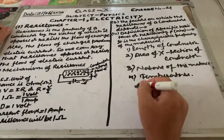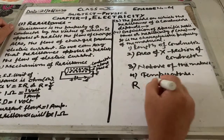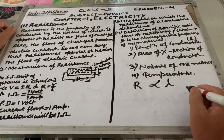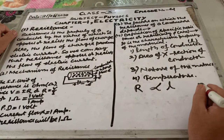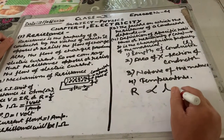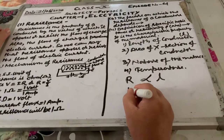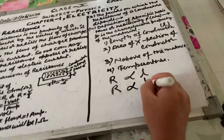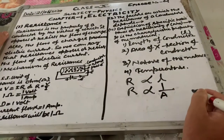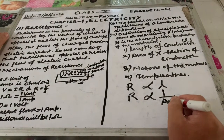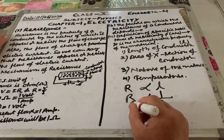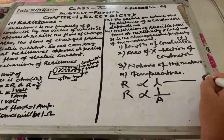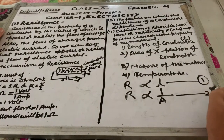Taking them one by one: resistance R is directly proportional to L, the length of the conductor. If we increase the length, the resistance will increase; if we decrease the length, the resistance will decrease. Second, resistance is proportional to 1 upon the area of cross-section. So if we increase the area of cross-section, the resistance will decrease.